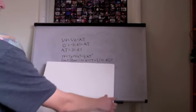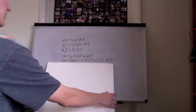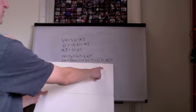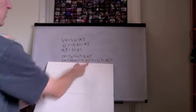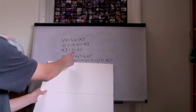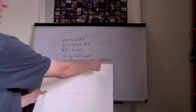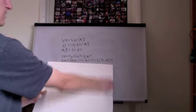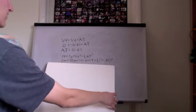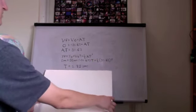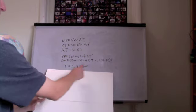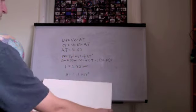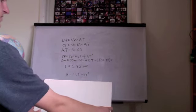We plug in what we know. For the at-squared term, we substitute our previously found value of 31.62 for at, then multiply by time — which is essentially the same as at squared. Solving that out with algebra, we get a time of 2.85 seconds. Plugging that back into the first equation, we get an acceleration of 11.1 meters per second squared.